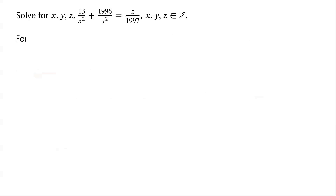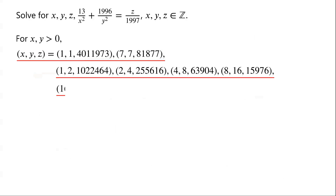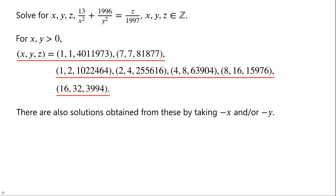In summary, for x and y greater than 0, we have 7 sets of solutions. There are also solutions obtained from these by taking negative x and/or negative y.